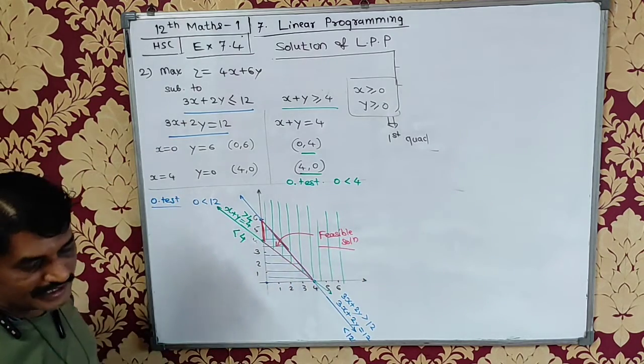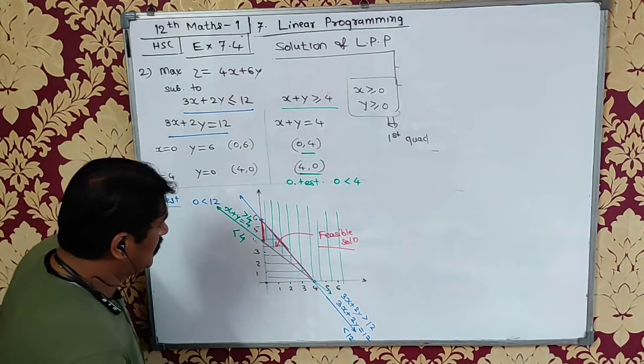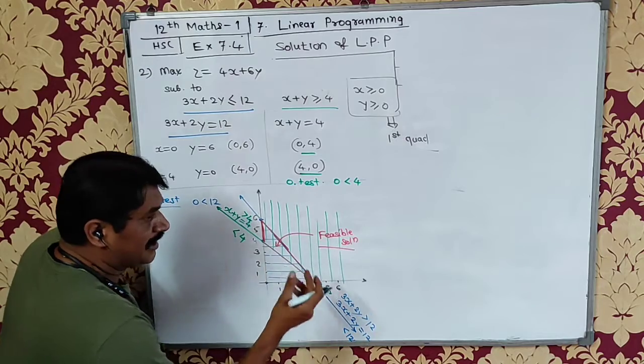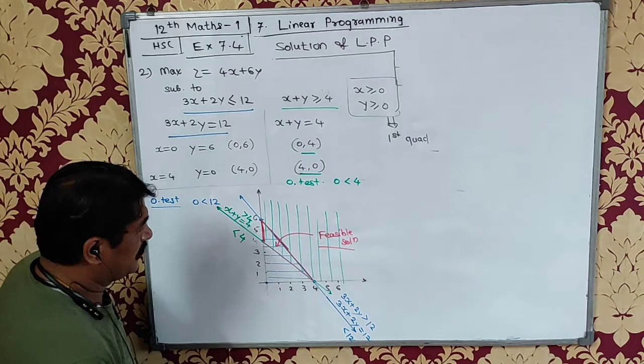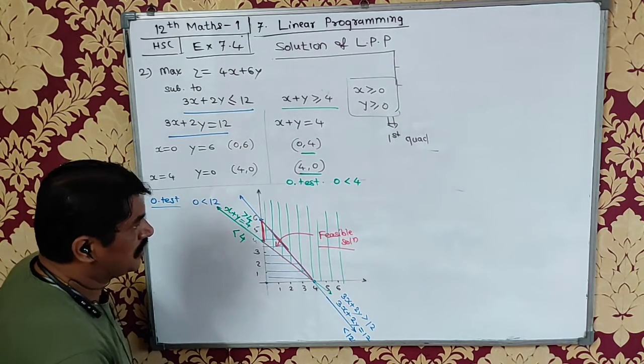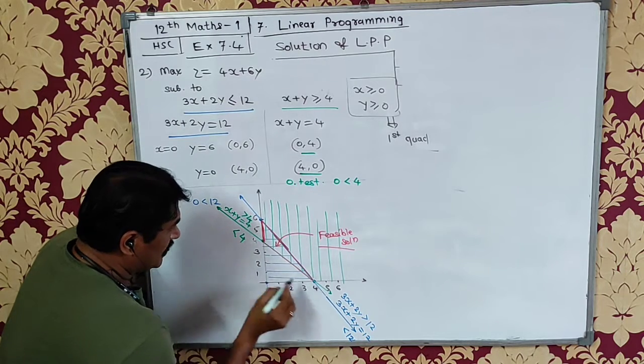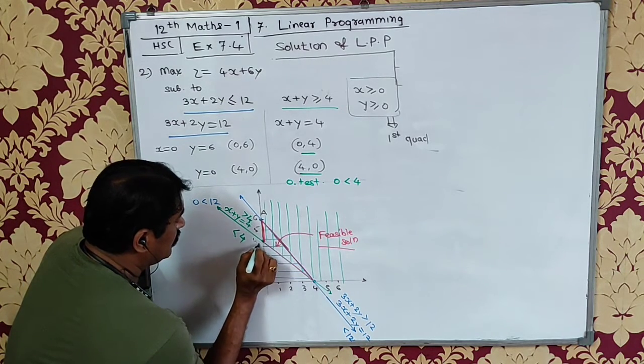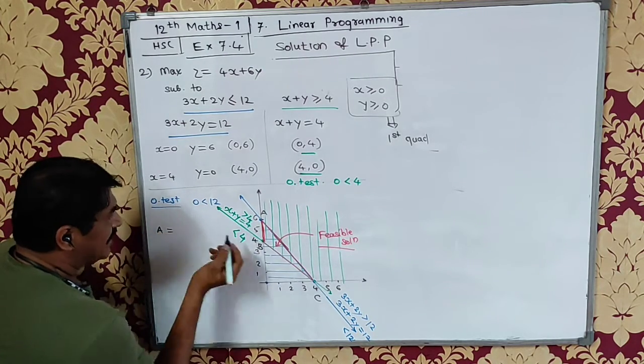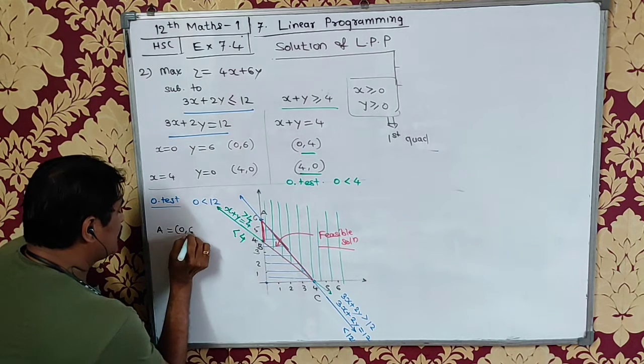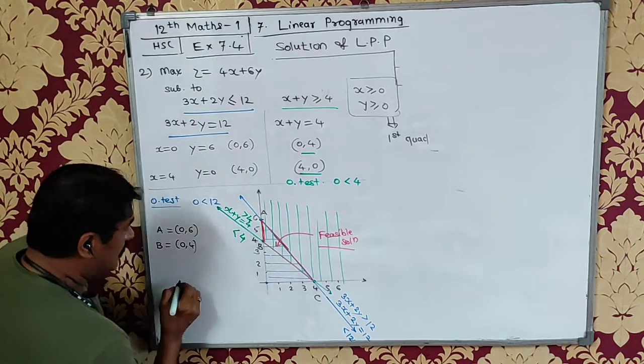After doing this, either we get a complete polygon or incomplete open solution. So this is a complete polygon. So this is A, B, and C. A coordinate is (0,6), B coordinate (0,4), and C coordinate is (4,0).